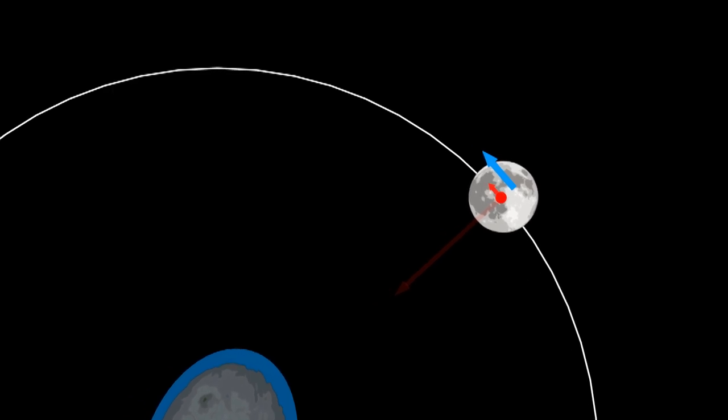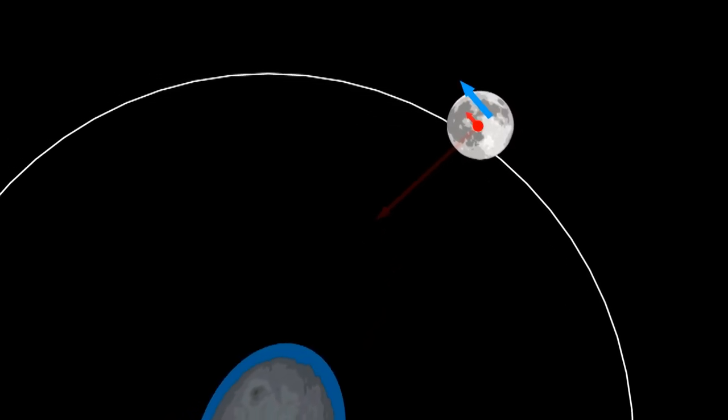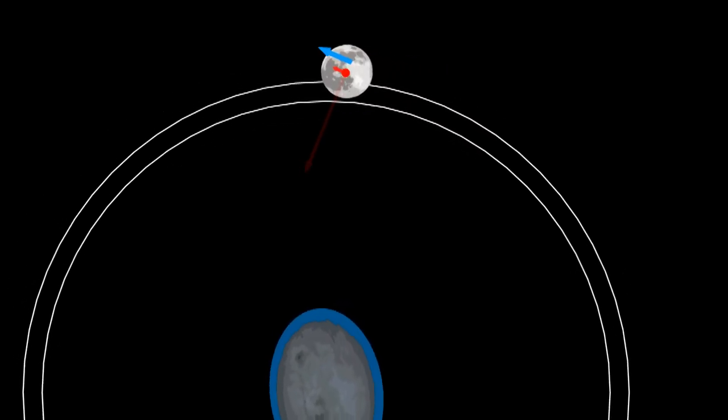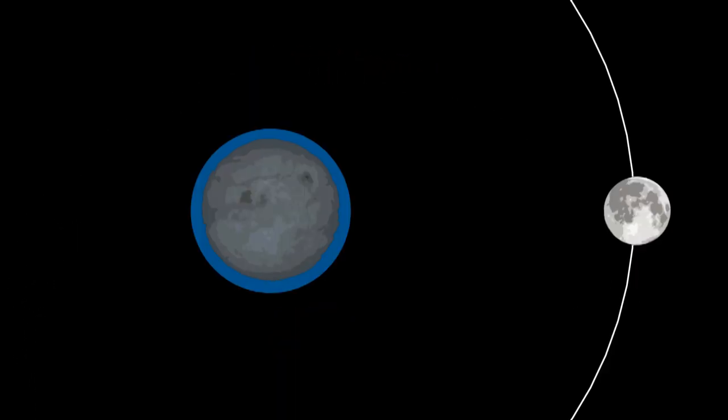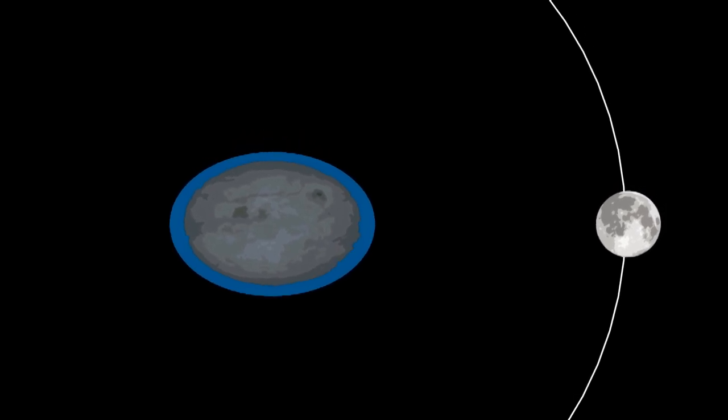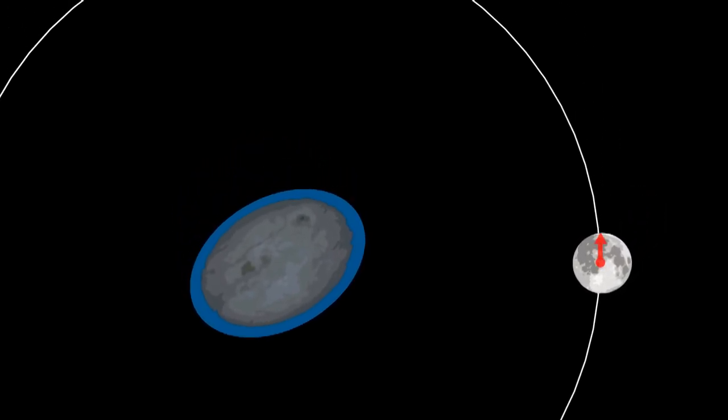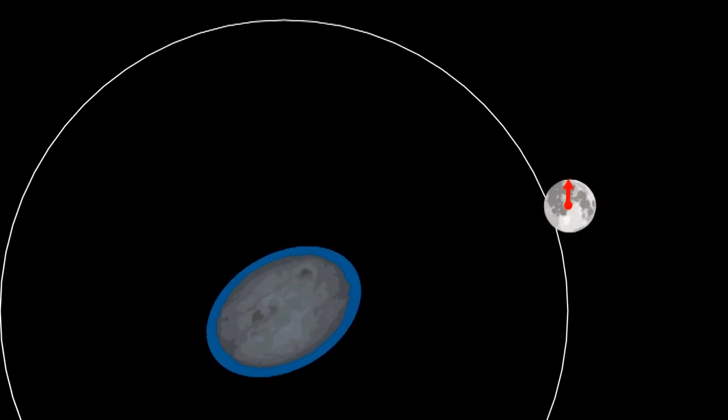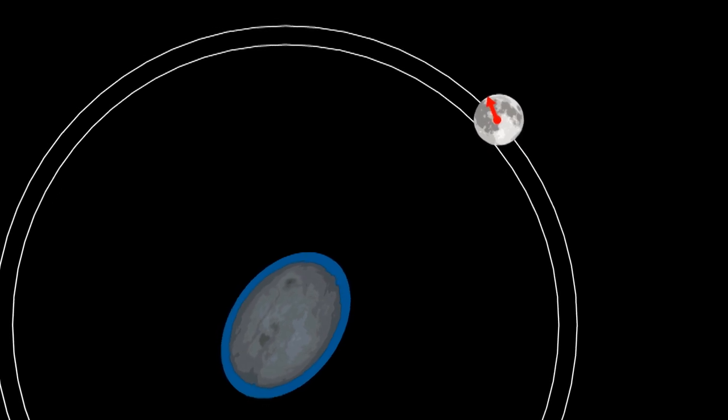So this force is pushing the moon forward. It is propelling the moon into a higher orbit and causing the moon to drift away. Now to recap, because we have a bulge on one side of the Earth, the moon accelerates slightly towards that bulge. This propels the moon forward into a higher orbit causing it to drift away.